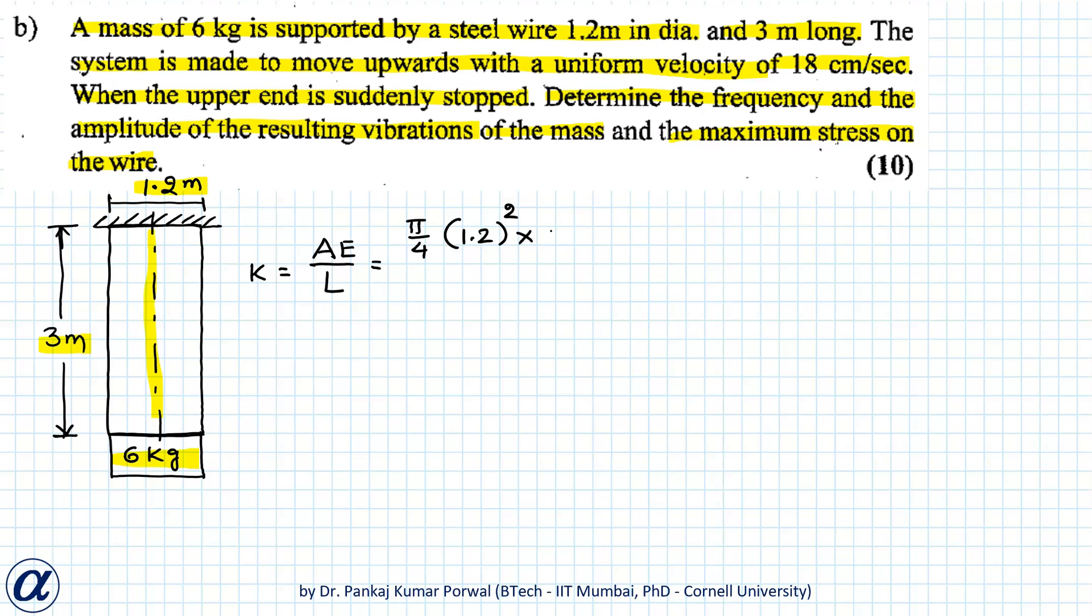I get A is π by 4 d squared, E I am not given but because it is a steel wire I will take E to be 210 GPa so that is 210 into 10 to the power 9 divided by 3. If I simplify this I get equals to 79.17 into 10 to the power 9 newton per meter.